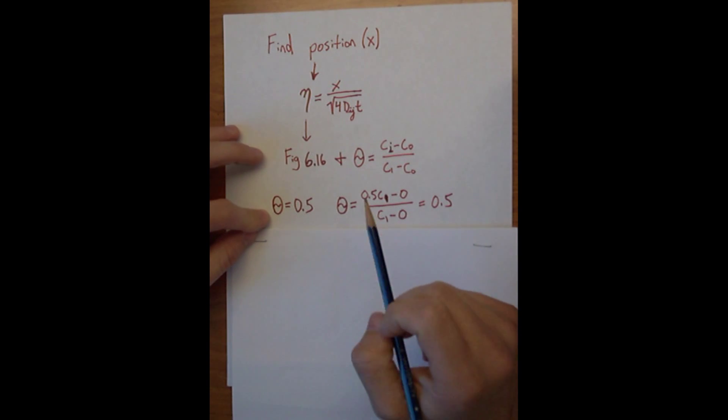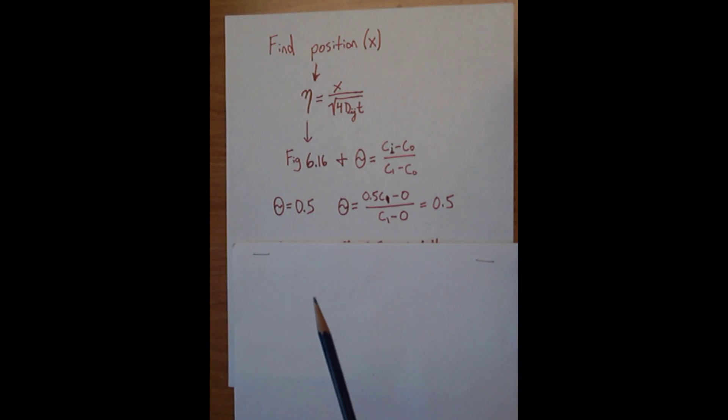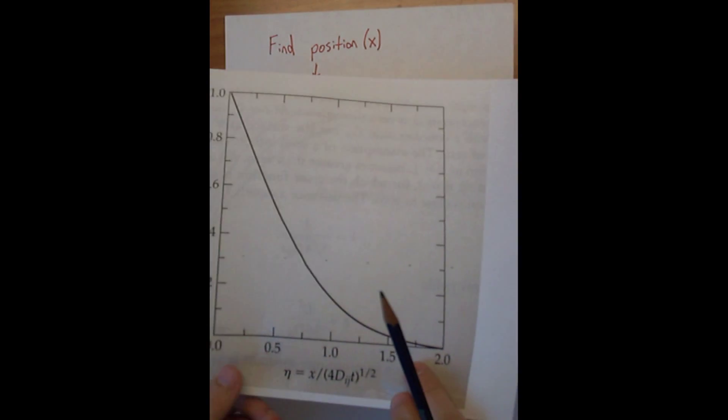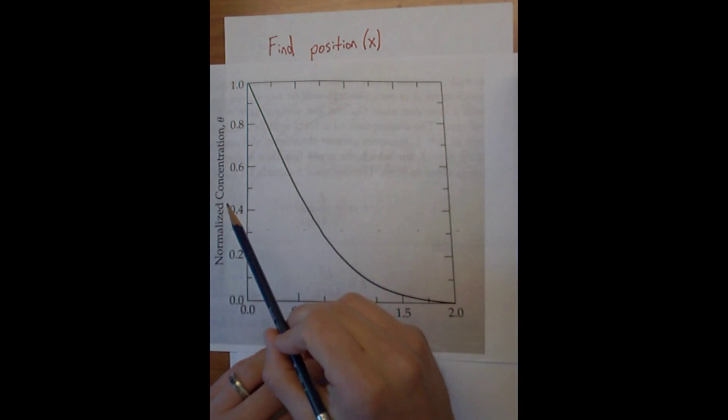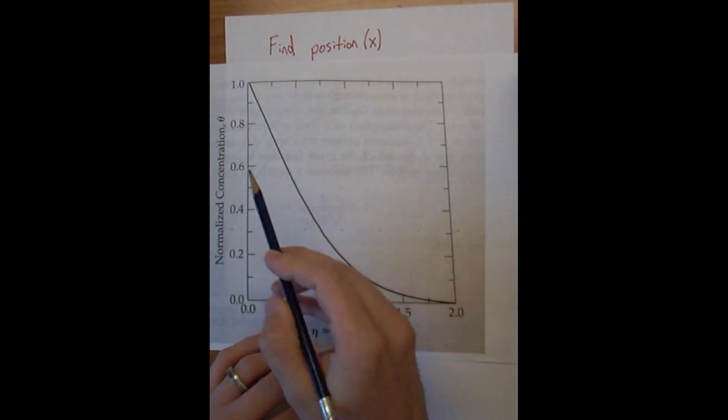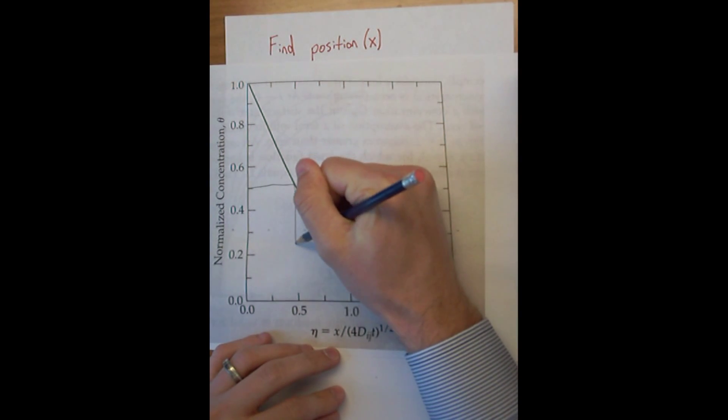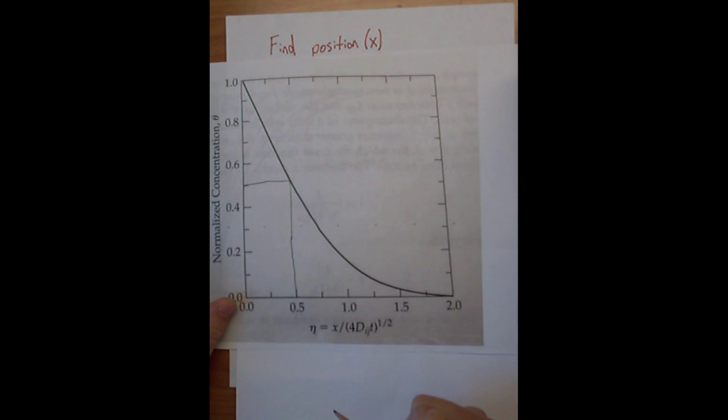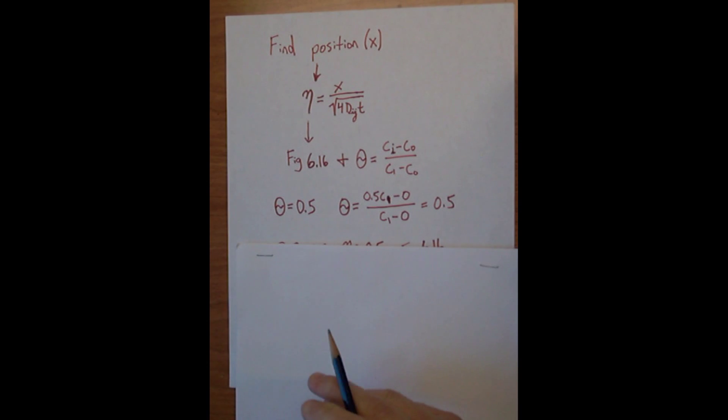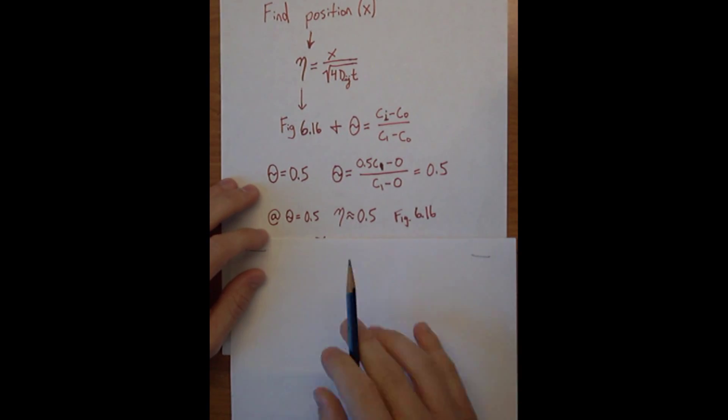So we know that theta is 0.5, and now using figure 6.16, which is right here, we can figure out what eta is. So the normalized concentration we figured out was 0.5. Look down here, and it's about 0.5 is what eta is. And that's what we show here.